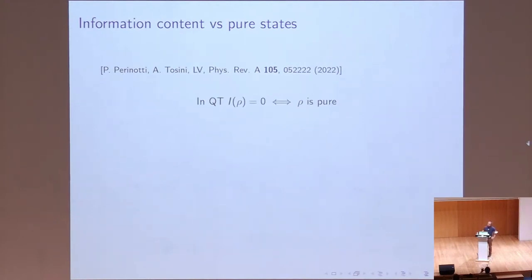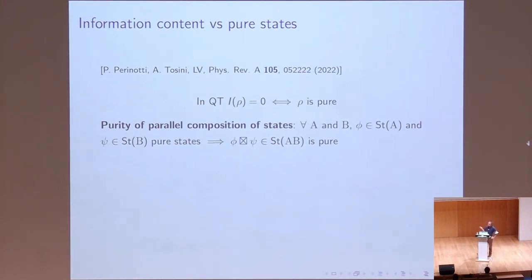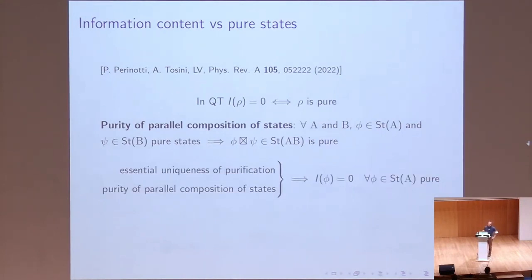We also investigated the relationship between the purity of states and our definition. In quantum theory the information content equals the von Neumann entropy, so it is zero if and only if the state is pure. We found that the implication from right to left is related to a property an OPT may or may not satisfy: purity of parallel composition of states — that for any pair of systems and any pair of pure states on those systems, the parallel composition of those two states is still pure. There are examples of theories where this can be violated. We proved that this property together with essential uniqueness of purification implies that for any pure state the information content is zero.